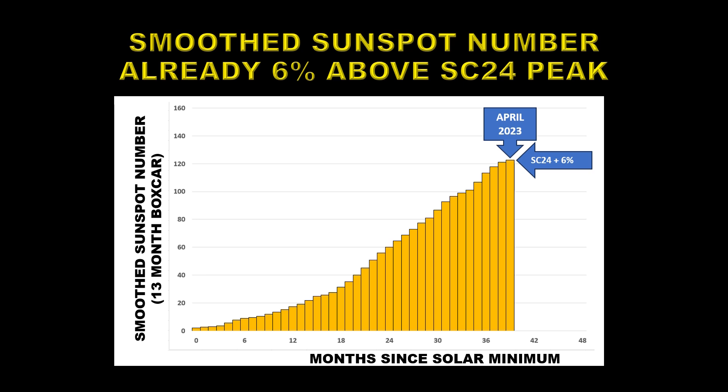The red line on the previous plot was not very clear, so I've plotted the smooth sunspot number in a different way here, just showing that data without the other elements. You can see that our most recent point is April of 2023 — that's because the smooth sunspot number is an average of 13 consecutive months — and its value is 122, which is 6% higher than the Solar Cycle 24 number.